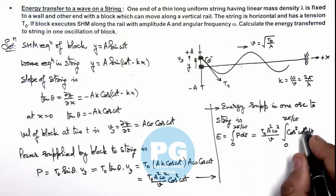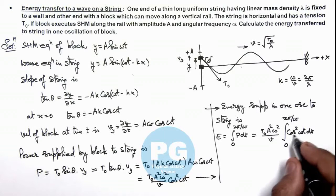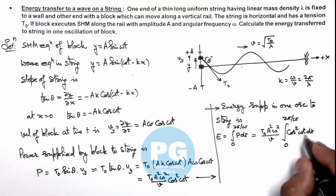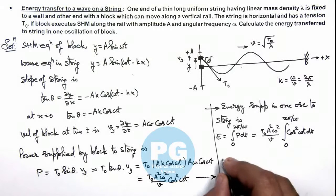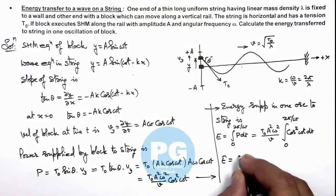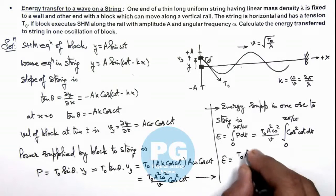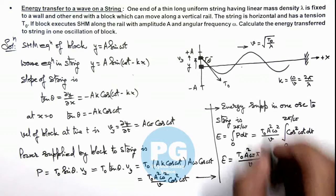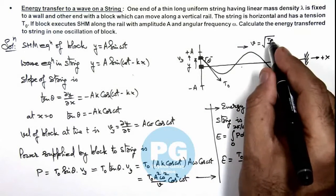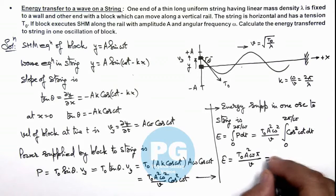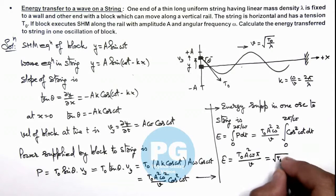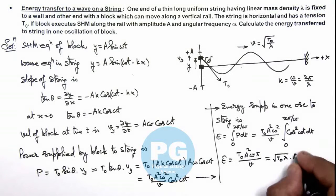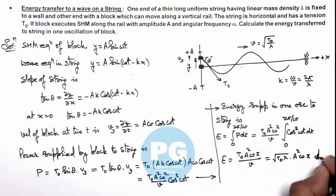I am leaving it as an exercise for you to integrate this function which is quite simple. You can open it in twice angle form as (1 + cos 2ωt)/2 and integrate it. This gives us the value of final energy as T₀ A² ωπ/v. The value of v we can substitute as √(T₀/λ), so this gives us √(T₀λ) multiplied by A² ωπ. That is the result of this problem.